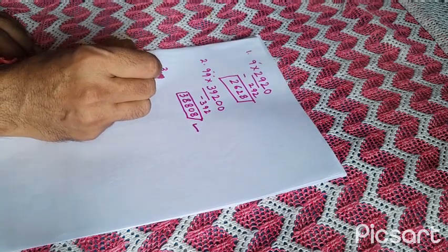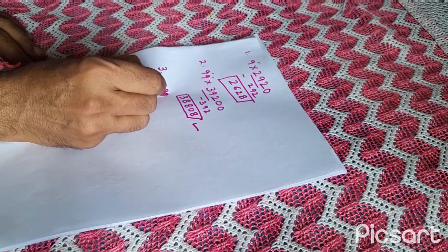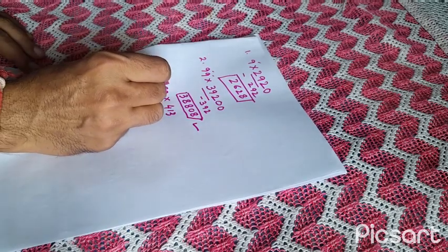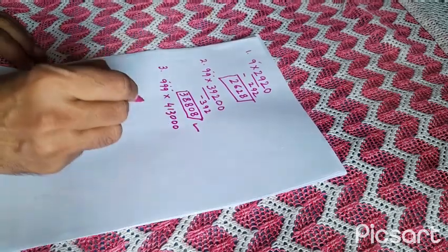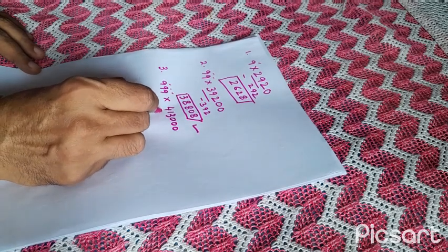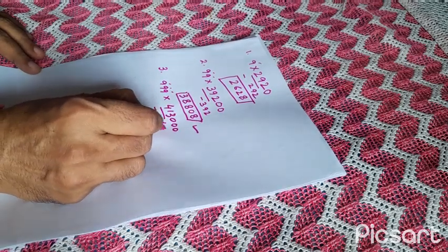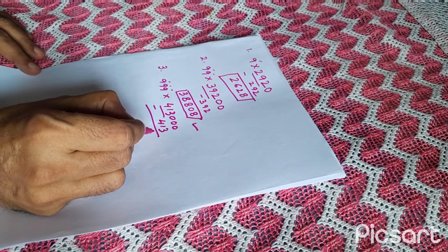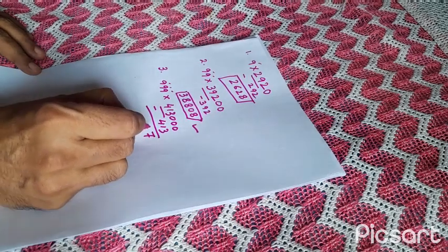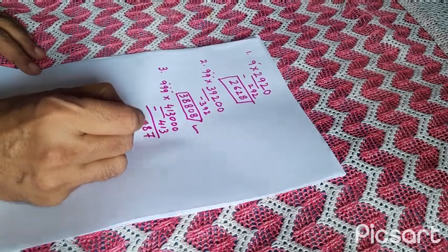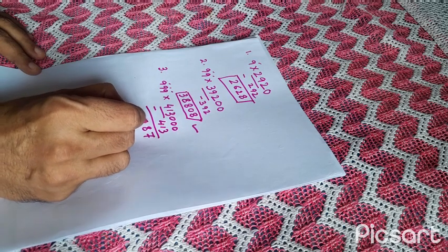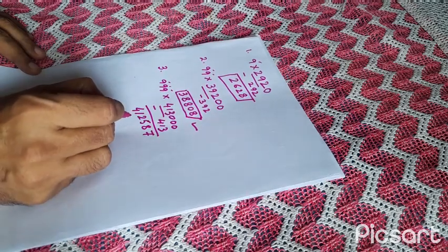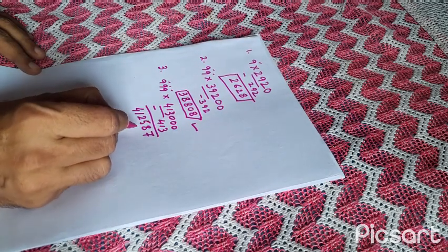Let us take another example: 999 into 413. So for three nines we'll put three zeros, then we'll deduct from this the original number which is 413. So if we deduct what will be the answer? 7, then 8, then 5, then 2, then 1, then 4. So 412587 is the answer.